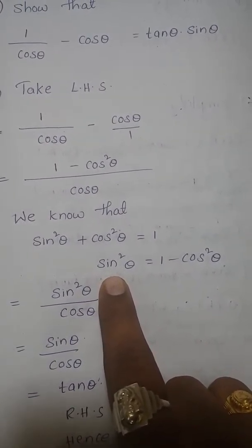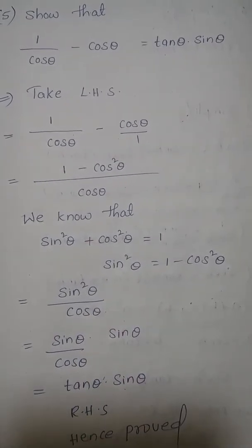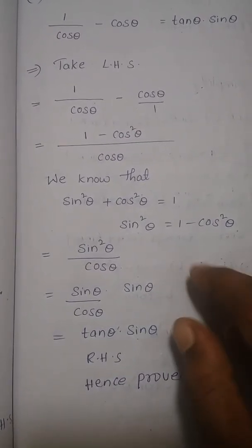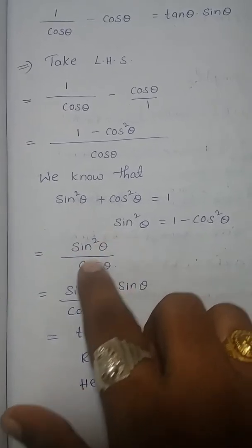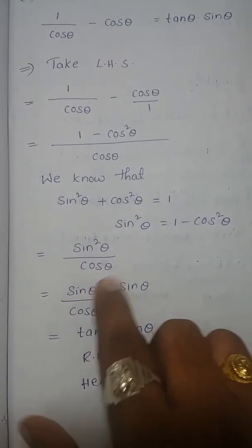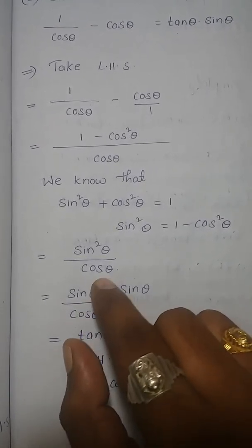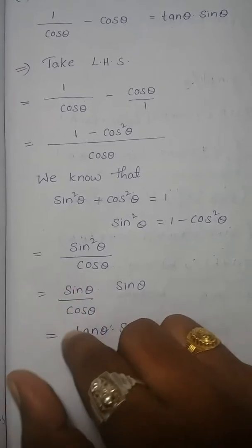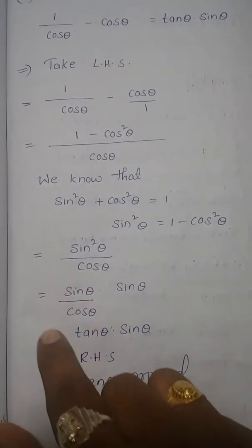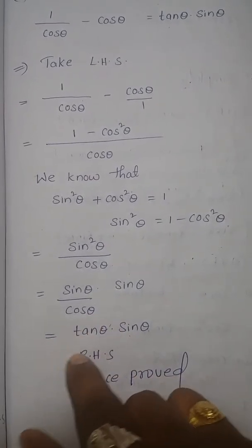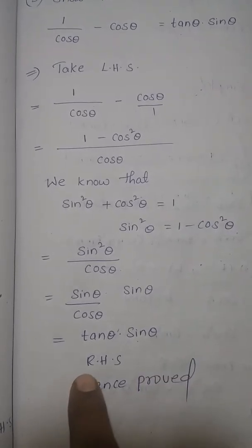From sin²θ + cos²θ = 1, we get sin²θ = 1 − cos²θ. So in place of 1 − cos²θ we can substitute sin²θ. Now sin²θ is nothing but sinθ · sinθ, so we can write sinθ/cosθ × sinθ. Since sinθ/cosθ = tanθ, we get tanθ · sinθ, which is the right hand side. Hence proved.